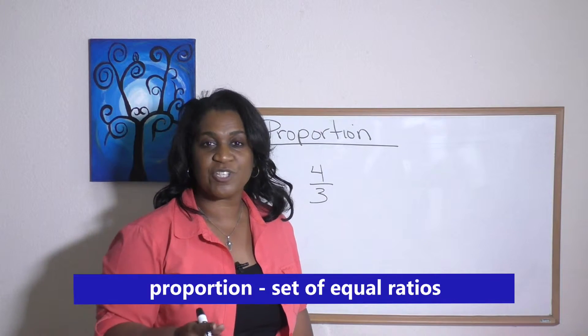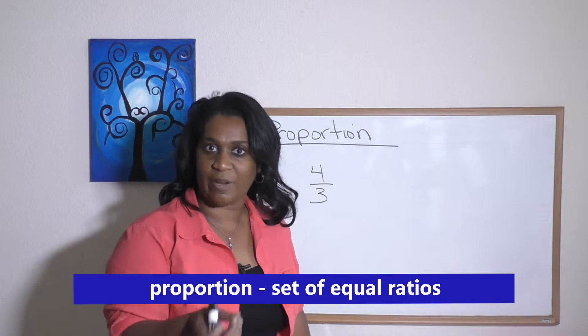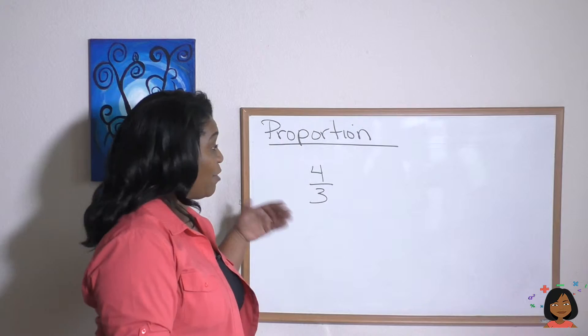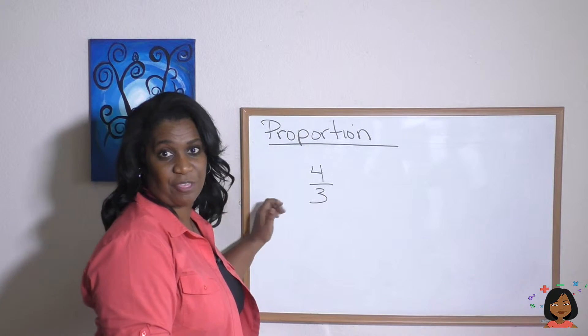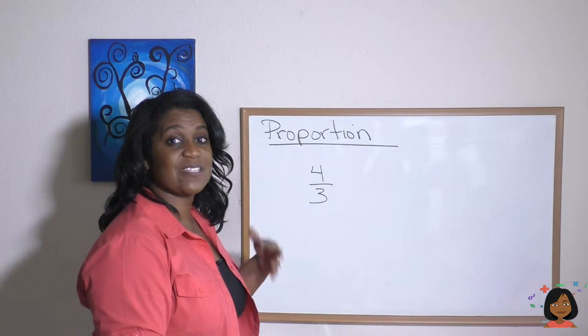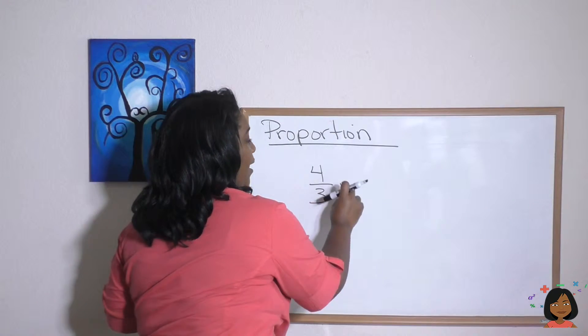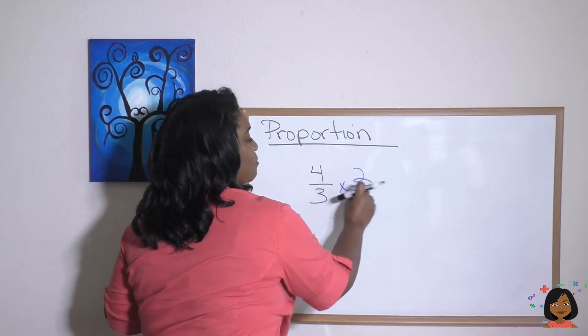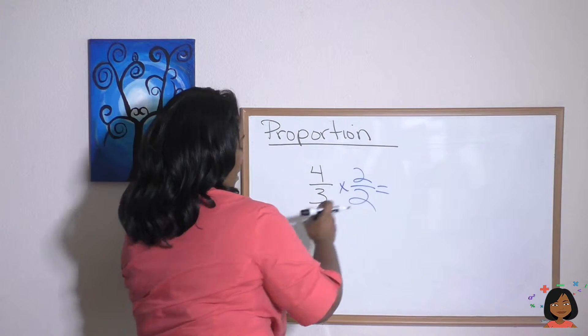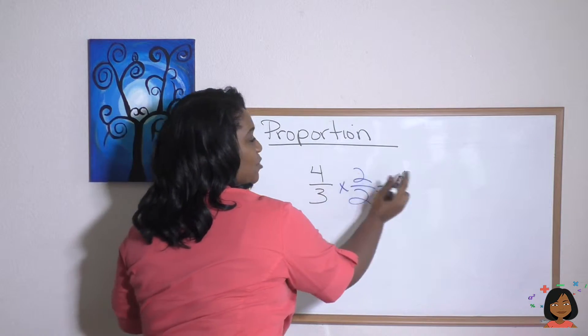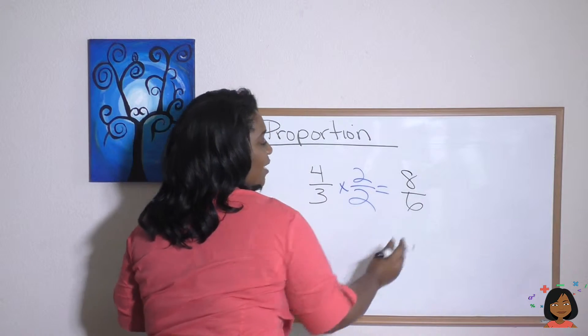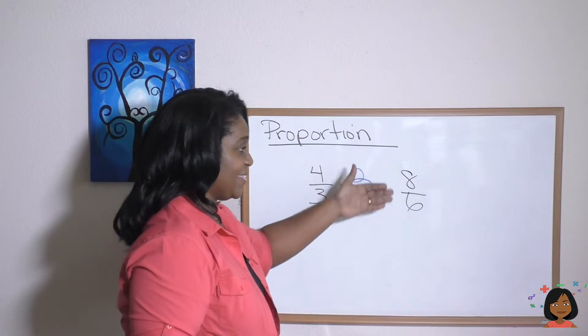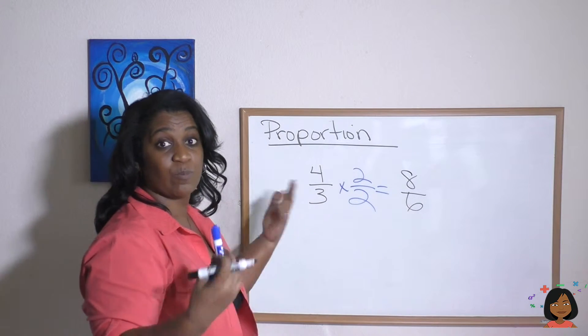And right off the bat, a proportion is a set of equal ratios. Take a look. So here I have a fraction, or you could say a ratio of 4 to 3. And if I wanted to find an equivalent, we multiply by a number that's the same on the top and the bottom. So let's say I want to multiply this by 2 over 2. It would give me 4 times 2 is 8, 3 times 2 is 6. So 4 thirds and 8 sixths are equal proportions.